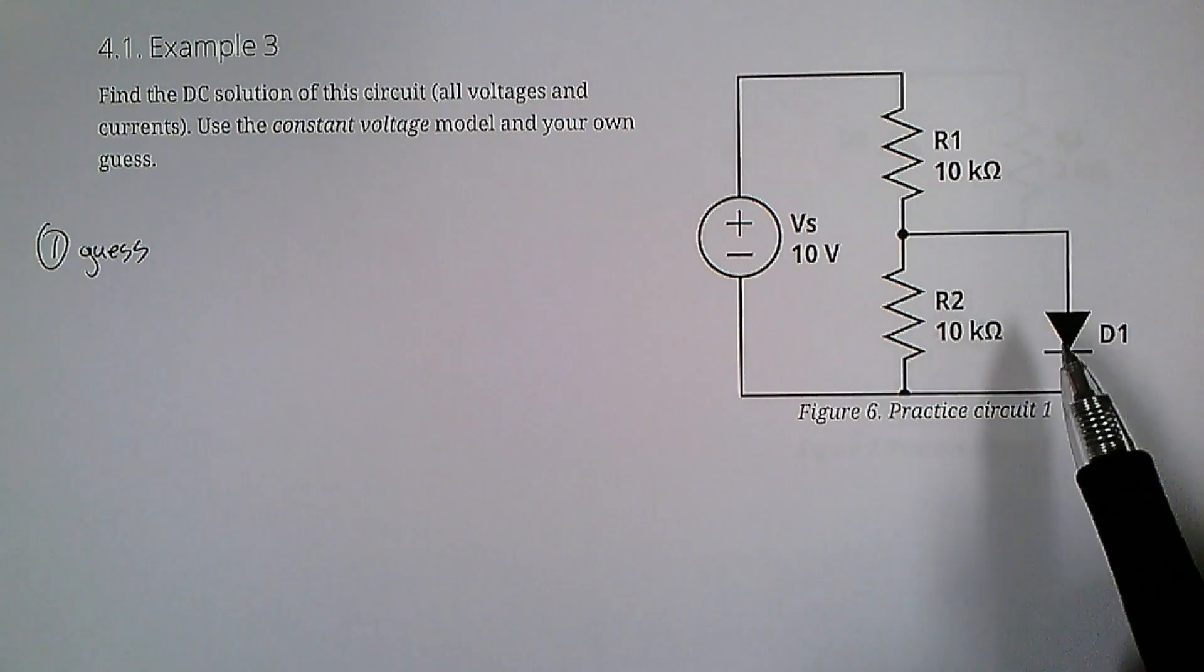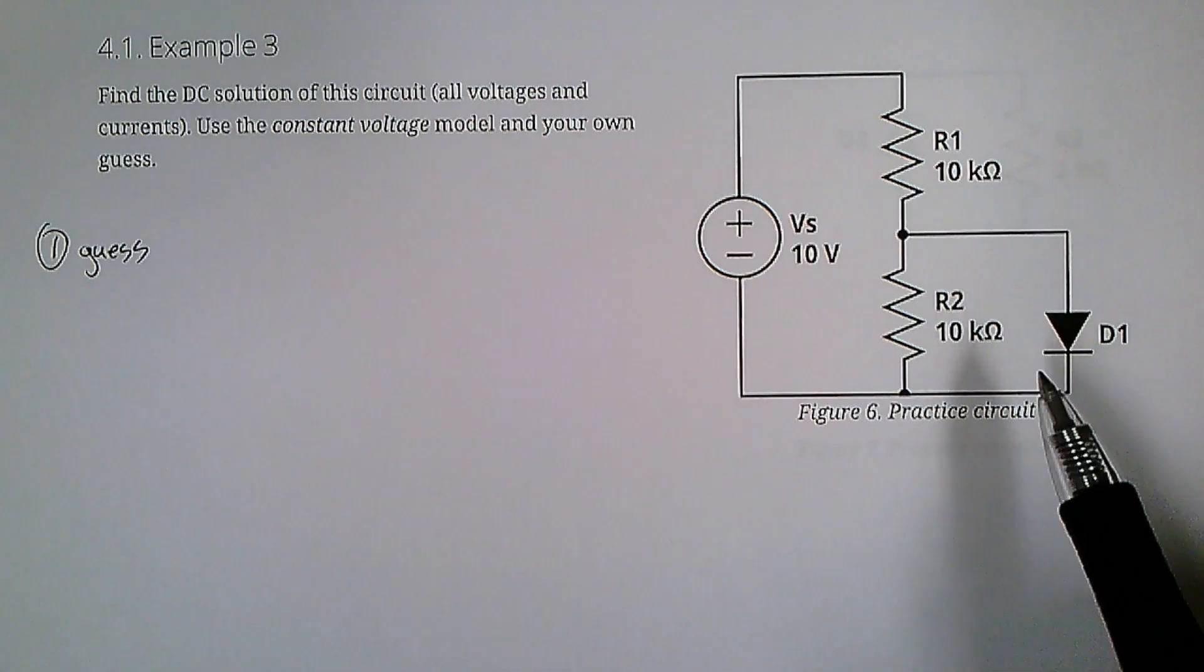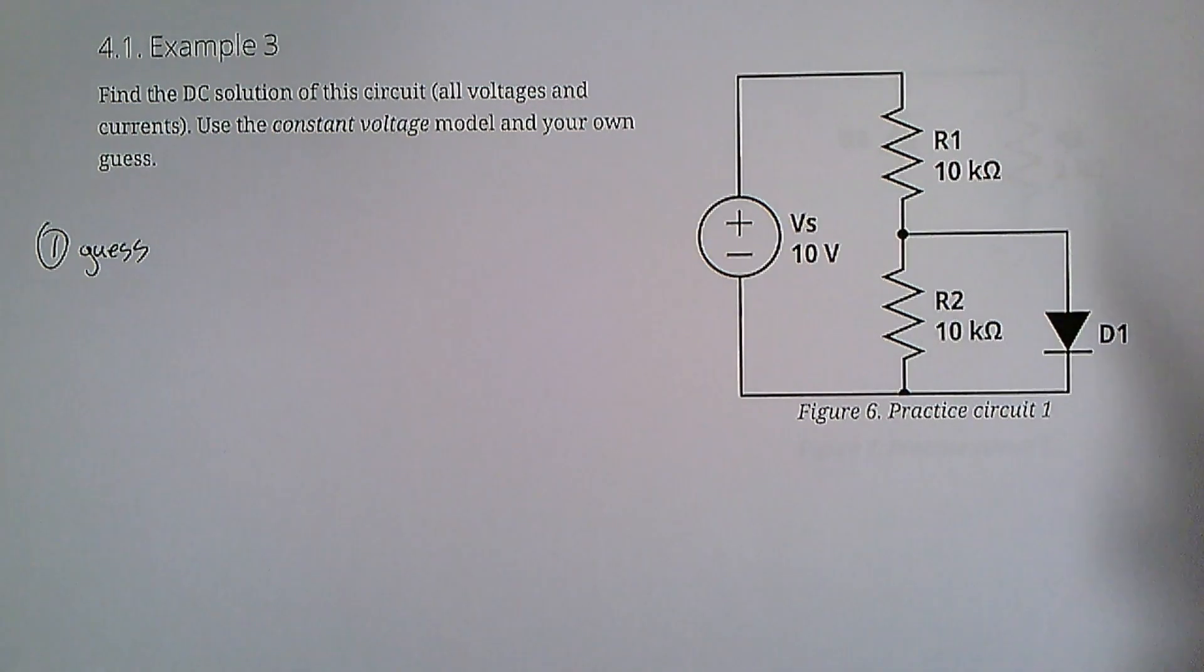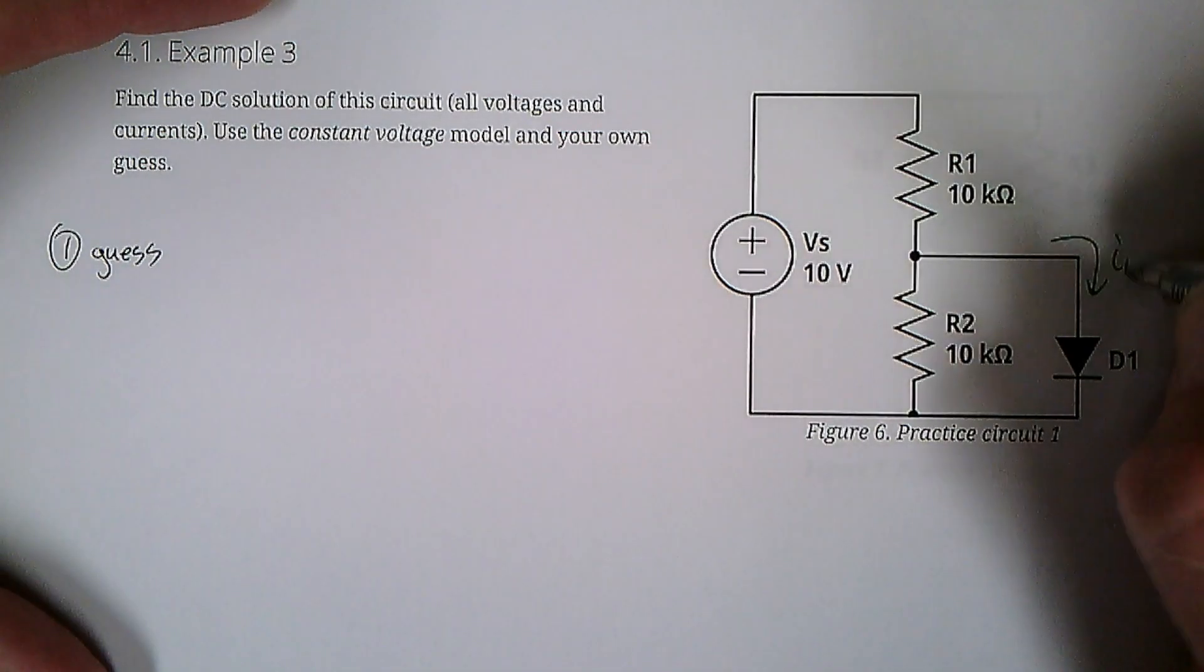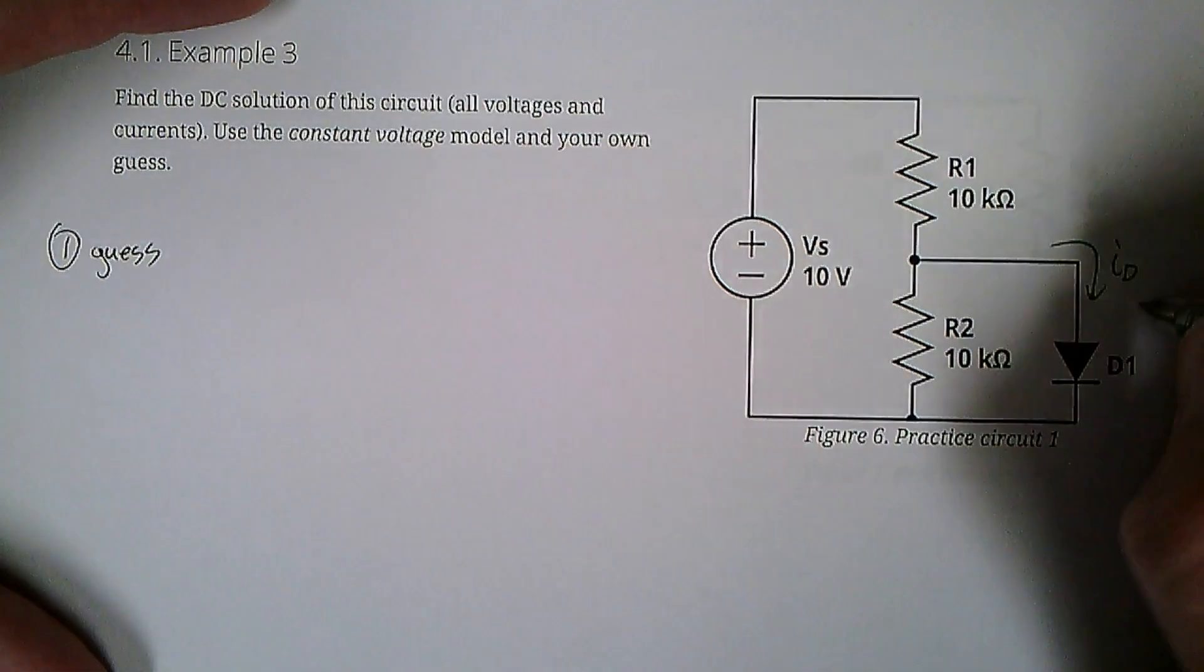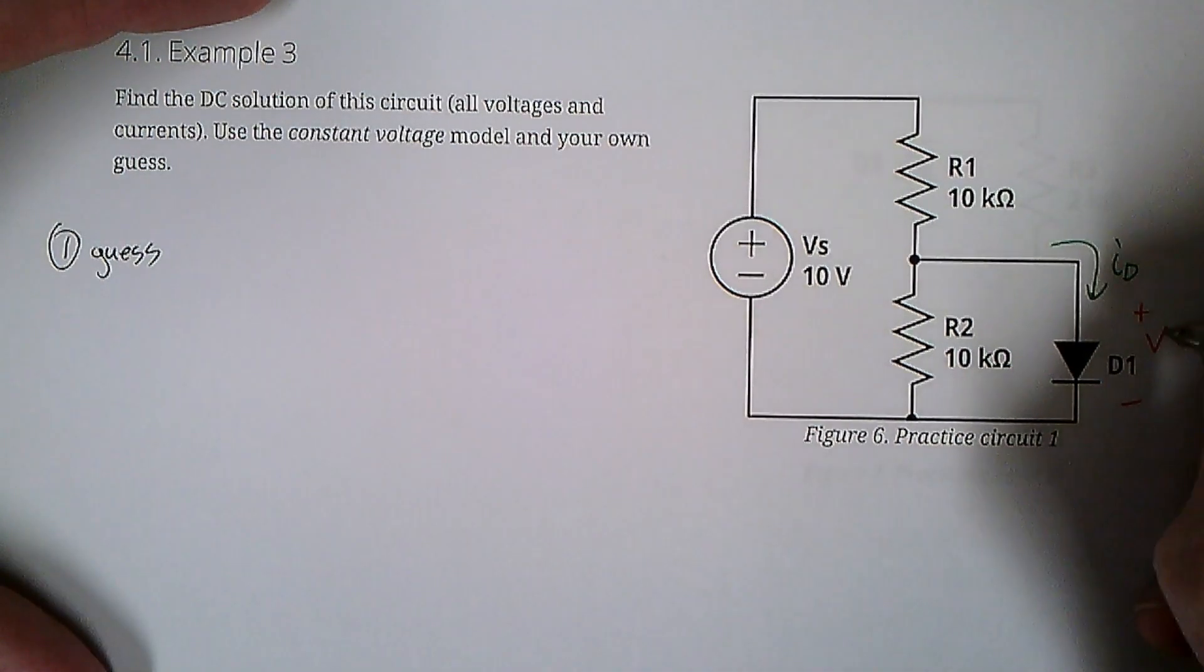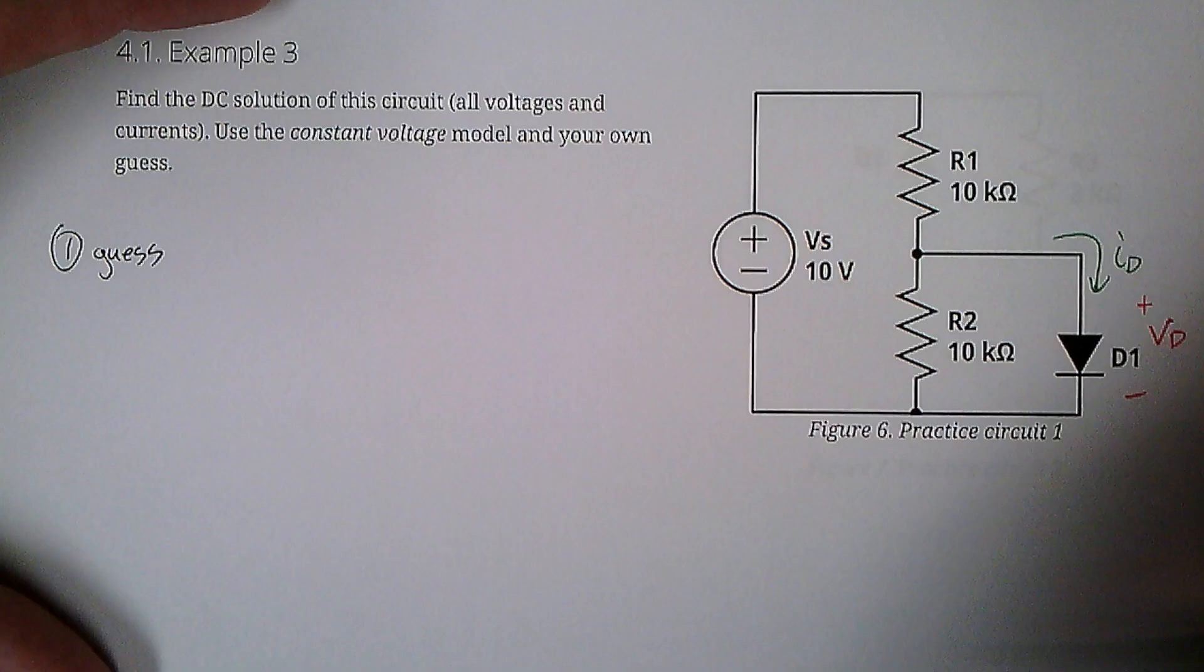Is current flowing through this diode or is it blocking it? I think you're also going to guess that current is flowing, is in fact flowing in the diode and going this way. The voltage across it, remember, is always in the same direction, VD. So I'm going to guess on.